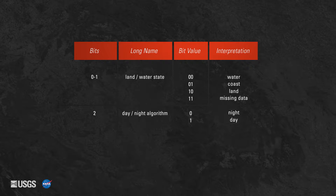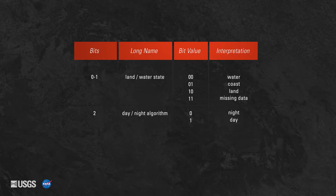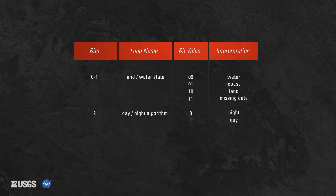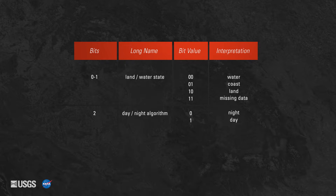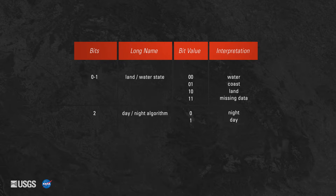When QA data values are decoded, they provide information on the state of the pixel. This information tells users whether an observation is over land, water, or coast, as well as whether the pixel value is a day or night observation. The MOD14 and MYD14 swath data products also provide additional quality information on the pixel in the QA layer, for example if atmospheric correction was performed.